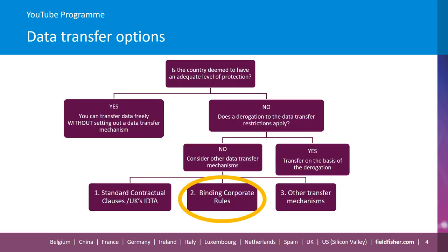Before I explain what binding corporate rules are, I think it is important to clarify where they sit within the wider sphere of data transfers. For the purposes of this session, we're going to use the term EU and EEA — European Economic Area — interchangeably. You may already be aware that the UK and the EU data protection legislation imposes restrictions on personal data transfers outside of these territories.